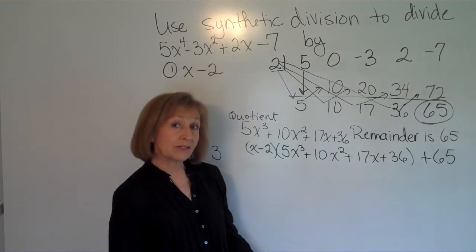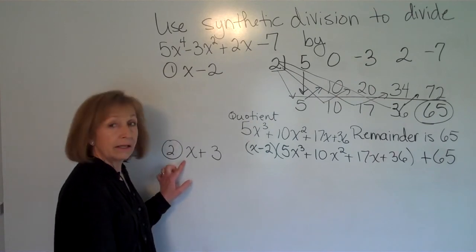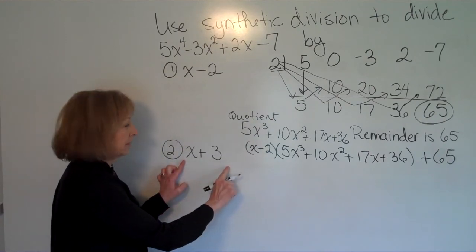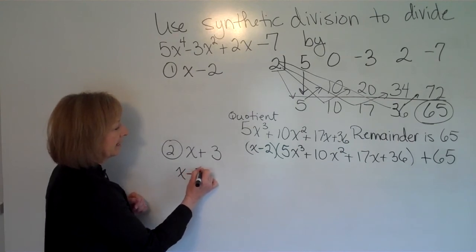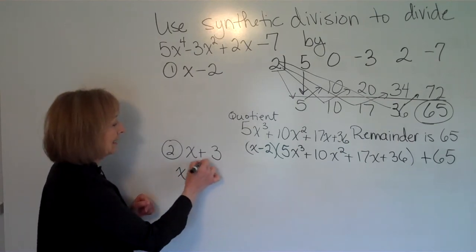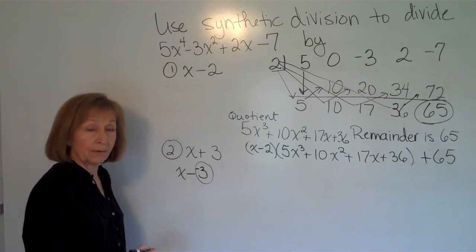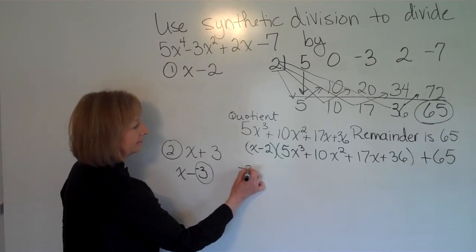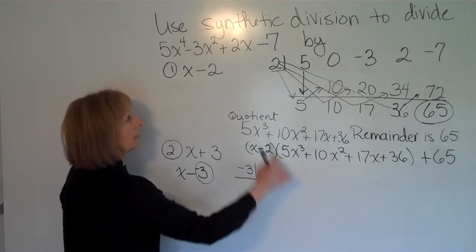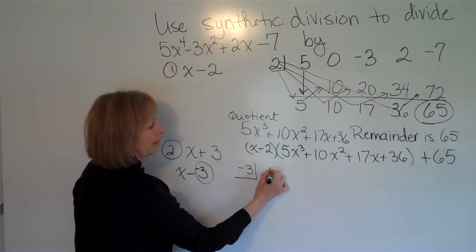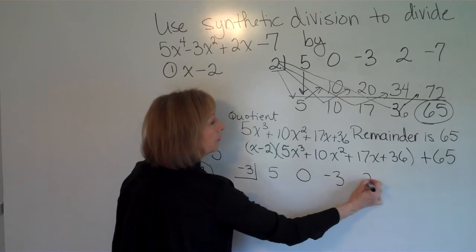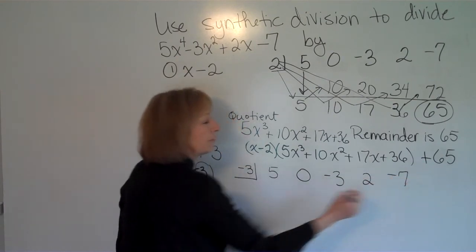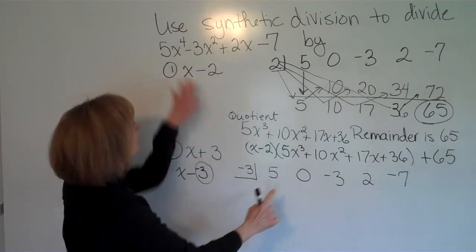Now let's look at the next example. For the divisor of x + 3, I want to think, well that's like x minus a negative 3. So -3 is what's going to go in the half box. I write the coefficients of the polynomial, making sure that I put the 0 as a coefficient for any term that's missing.